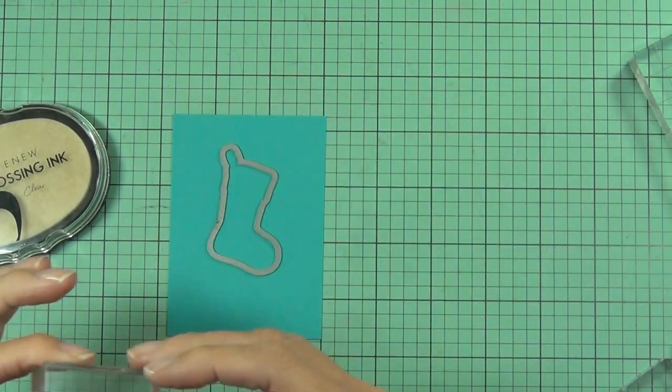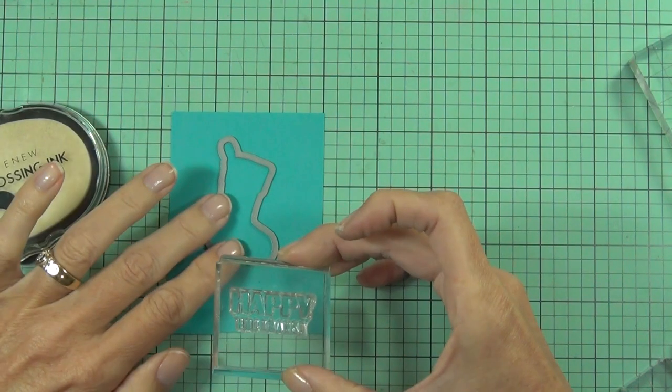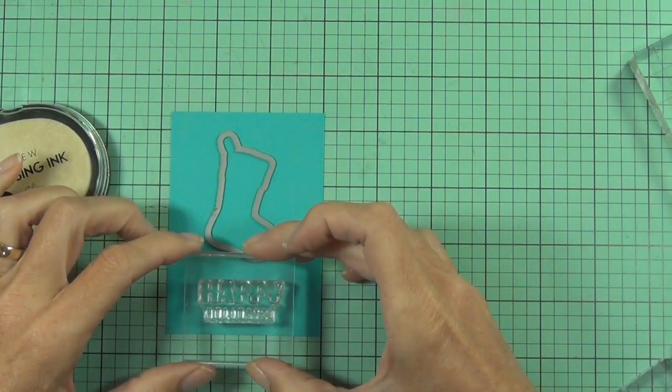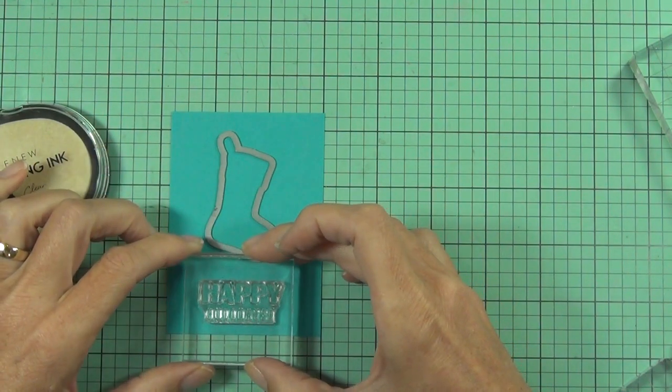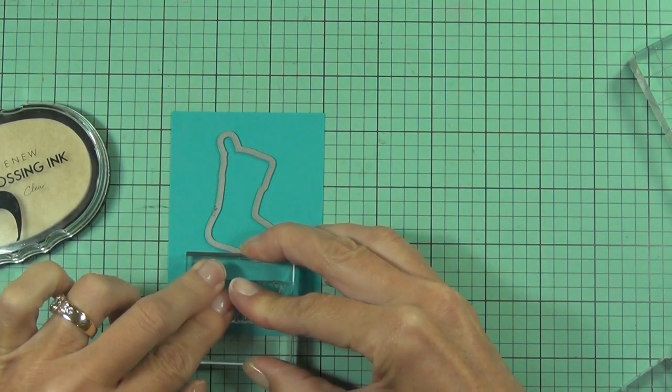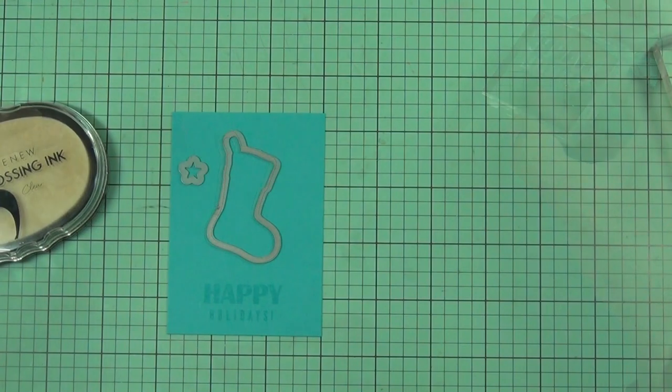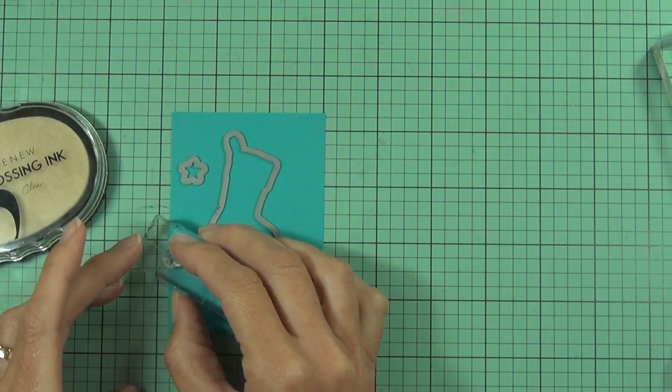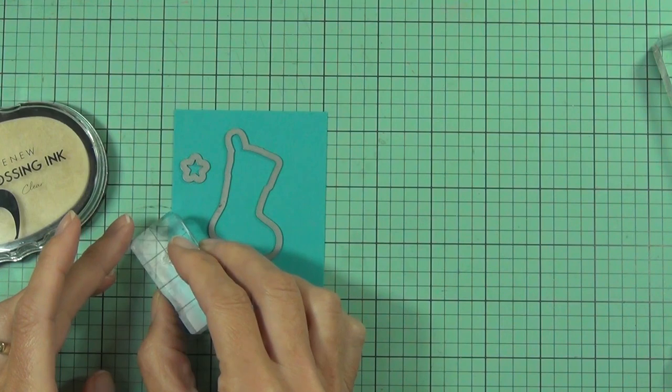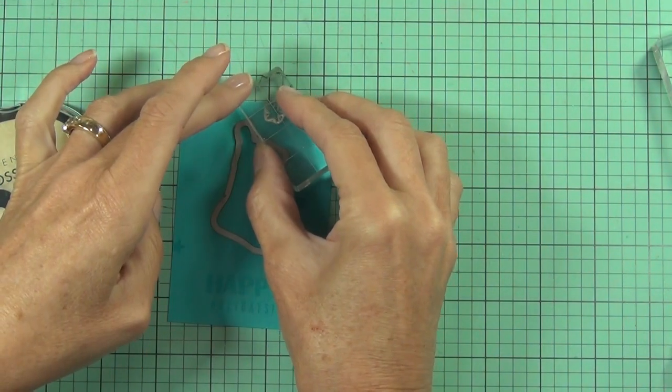These were only just released, they're great Christmas stamps and dies from Altenew and I'm wanting to white heat emboss this. So I've just placed my die-cut on the panel where I'm going to be cutting it out and that just helps me with the placement for the stamps because it is a bit difficult to see the embossing ink.